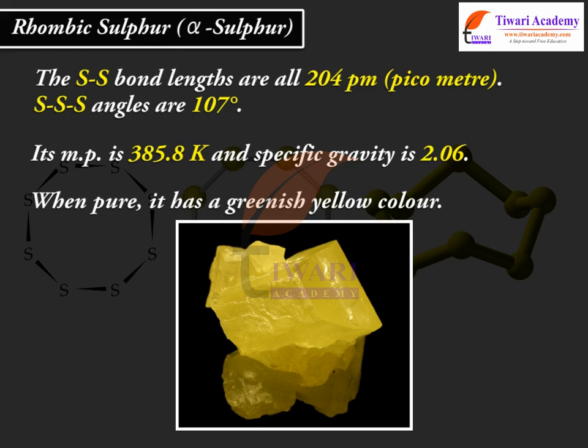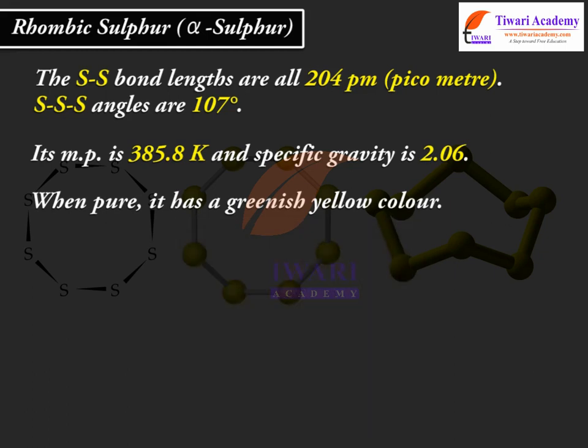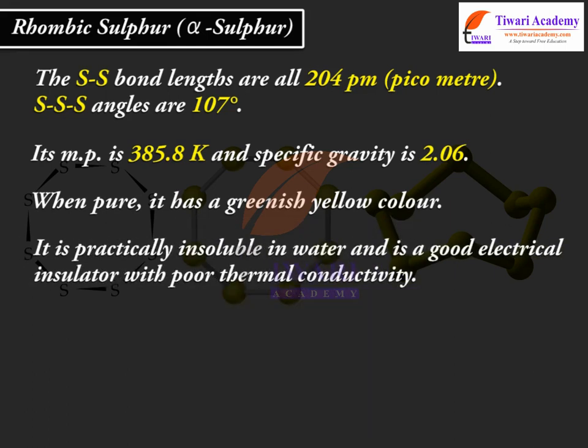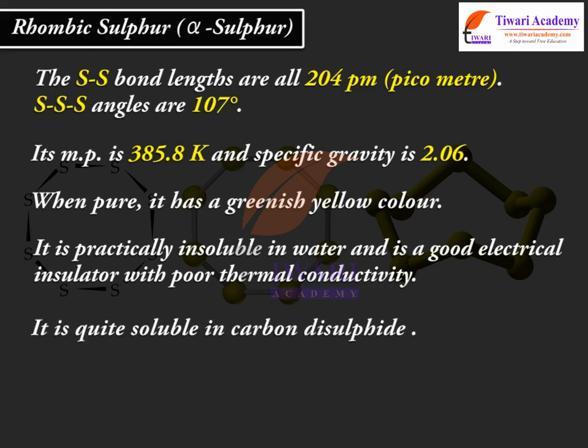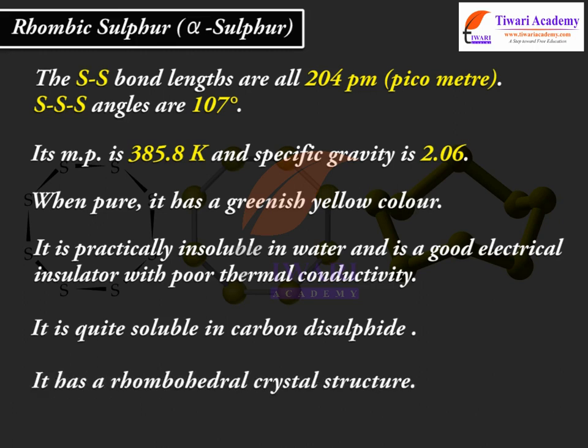When pure, it has a greenish yellow colour. It is practically insoluble in water and is a good electrical insulator with poor thermal conductivity. It is quite soluble in carbon disulphide. It has a rhombohedral crystal structure.